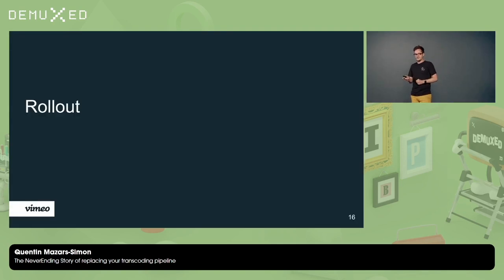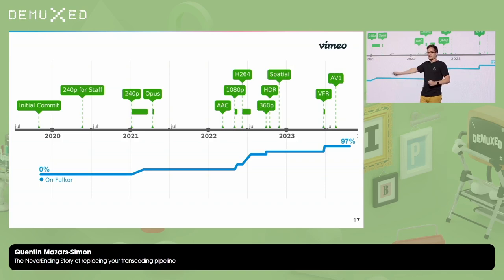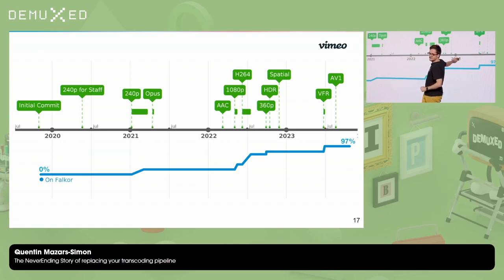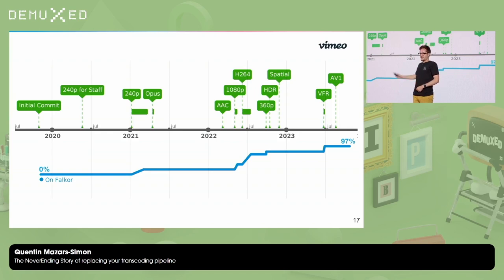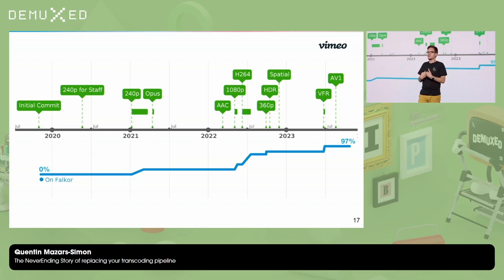How did we roll it out? Initial commits were around October 2019, and we're here in October 2023 — at about 96-97% of our traffic, and it's still not done after two years. Development started in 2020, and we had a release ready for internal Vimeo employees in production around May 2020.